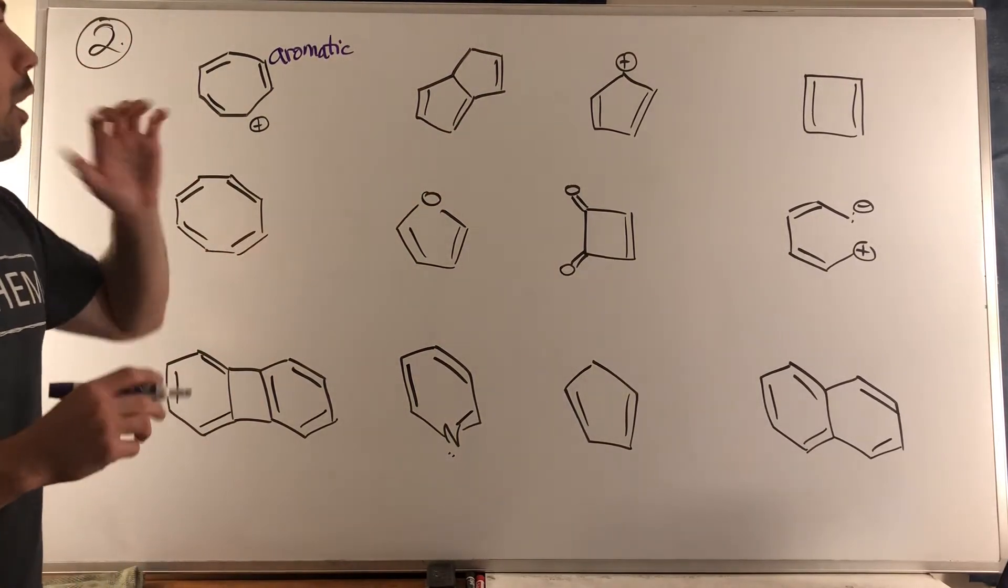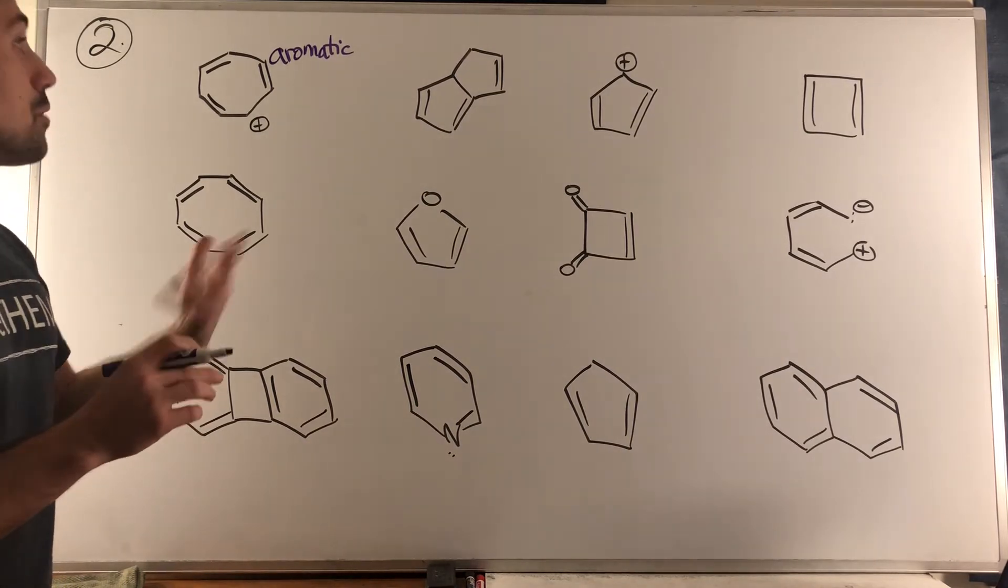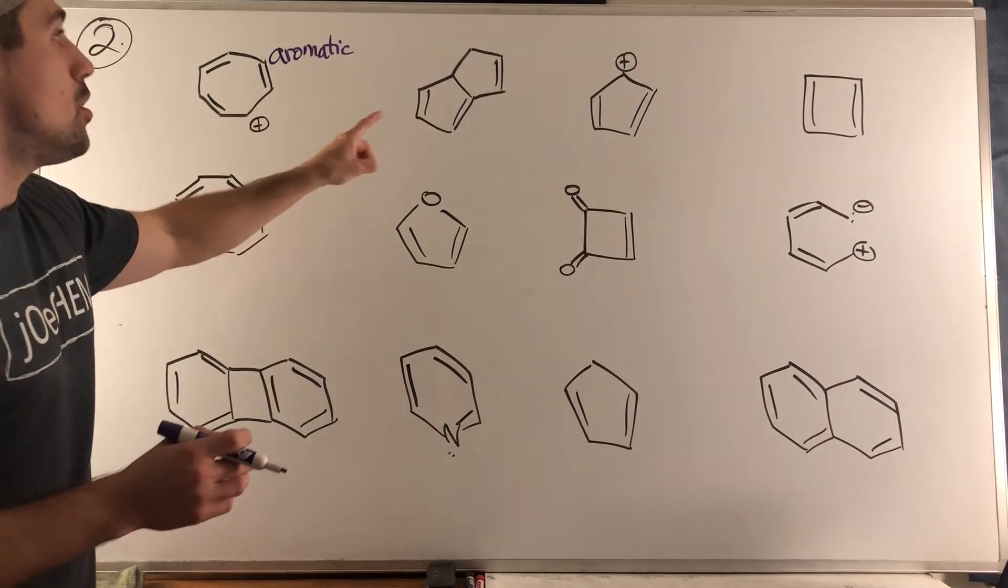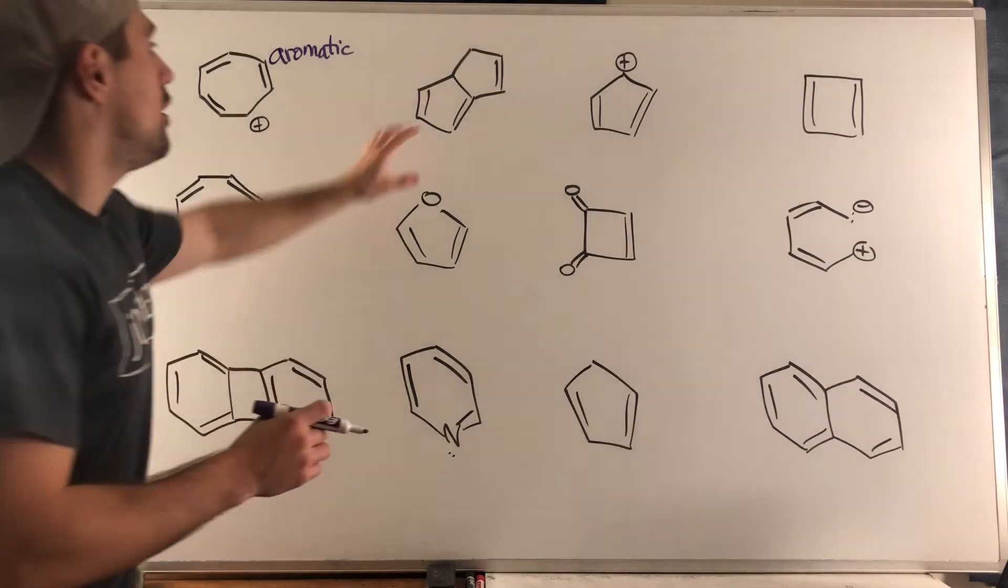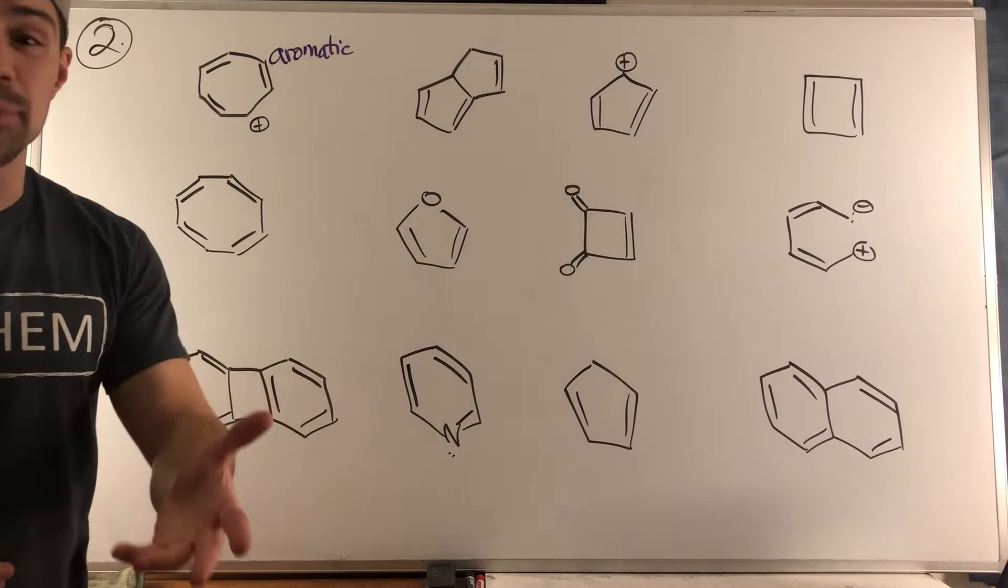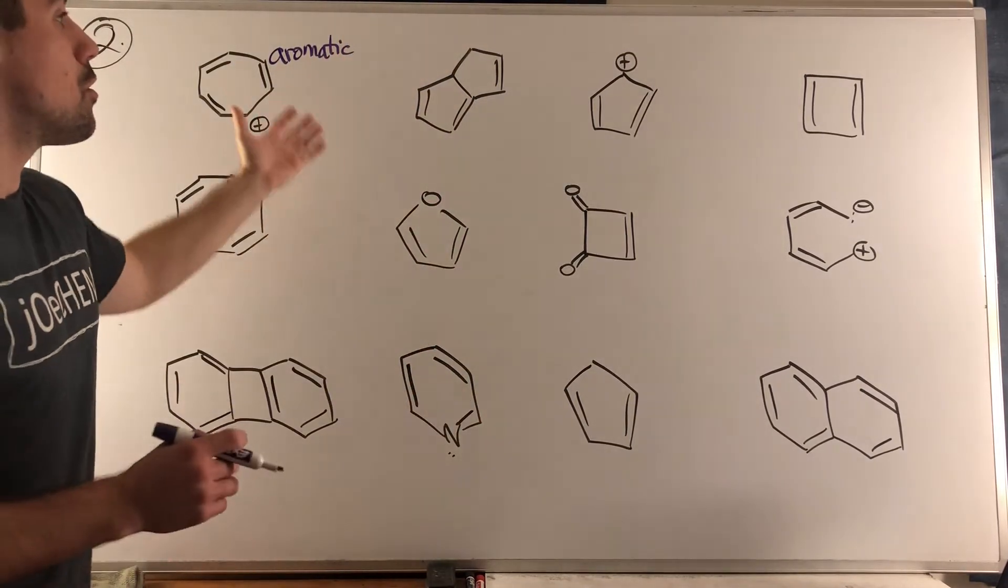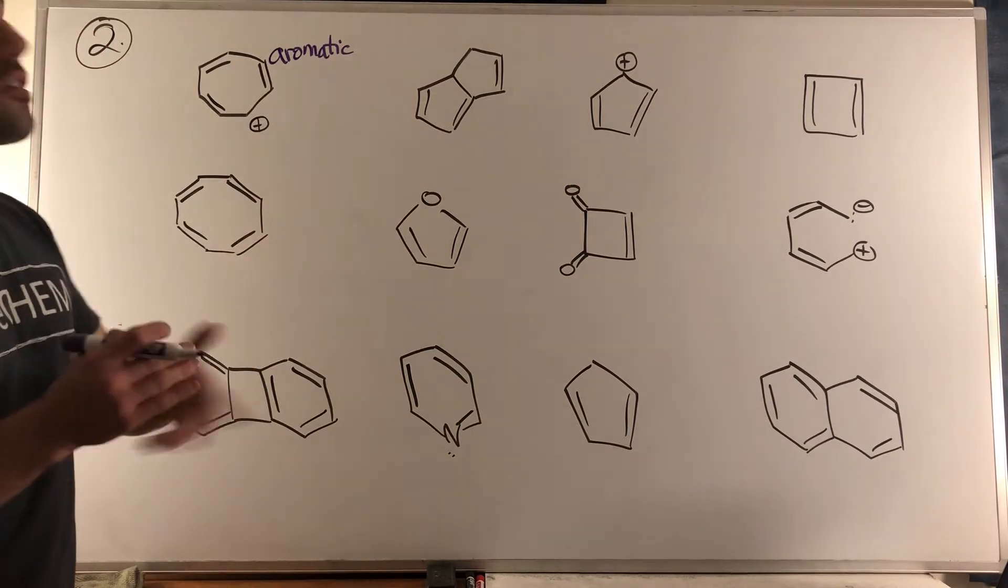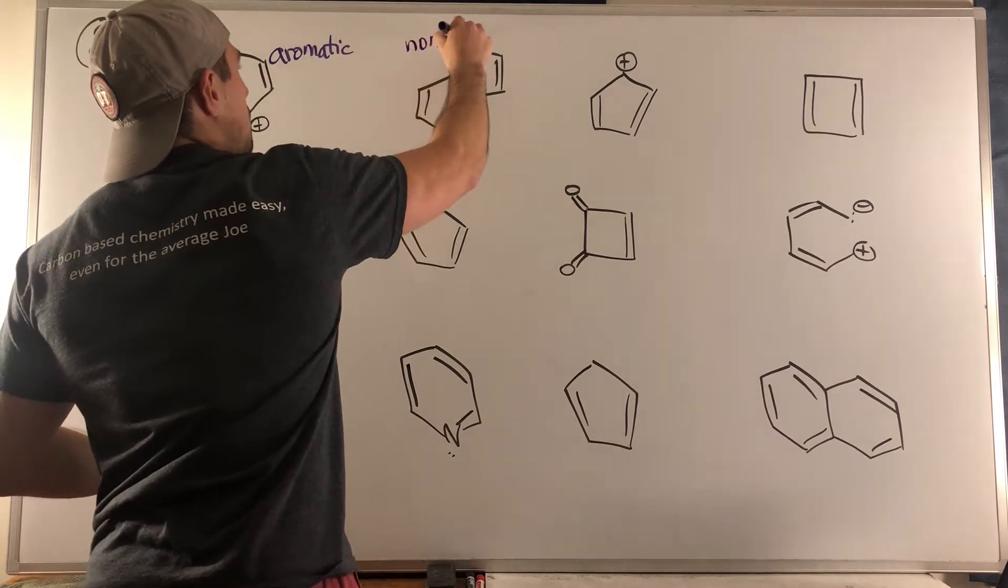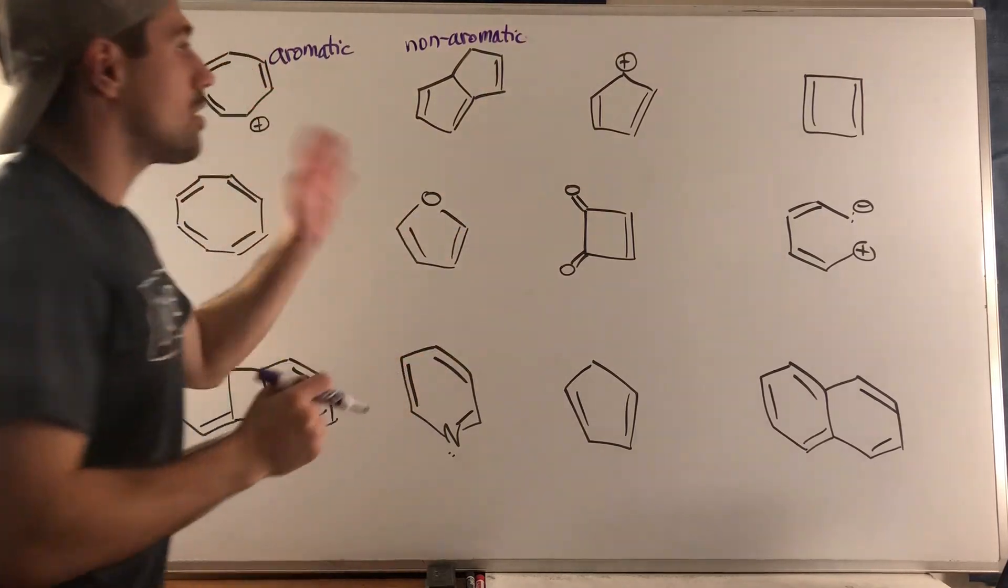Moving along over here, it's a ring, but before we even consider that we need to make sure it's conjugated. There's no ring system where every atom is sp2 hybridized. If you just consider this ring right here, you can see this carbon right here is not sp2 hybridized, it's sp3, and up here as well. These two carbons would be a problem. We can't even get past the ring conjugated piece of criteria, so this is going to be non-aromatic.